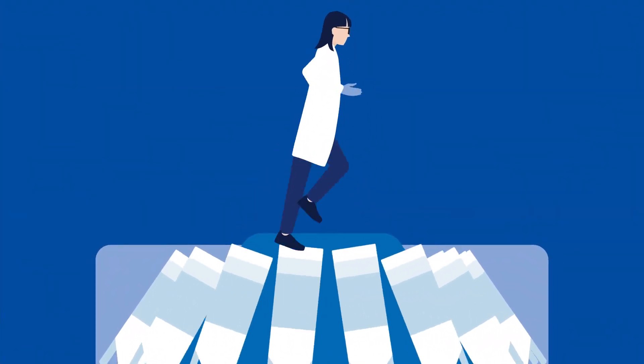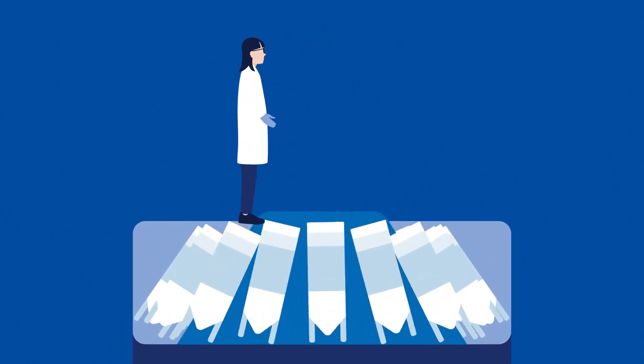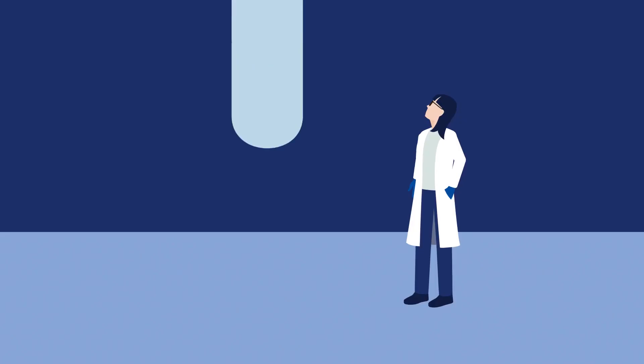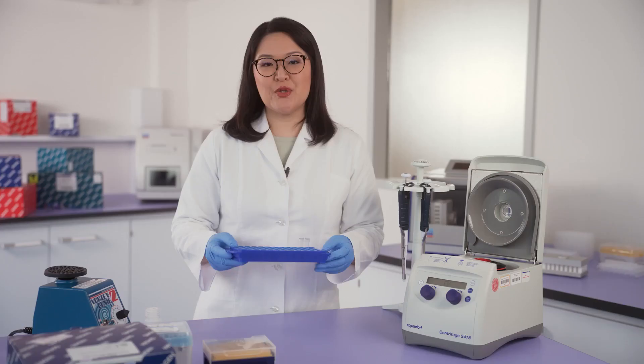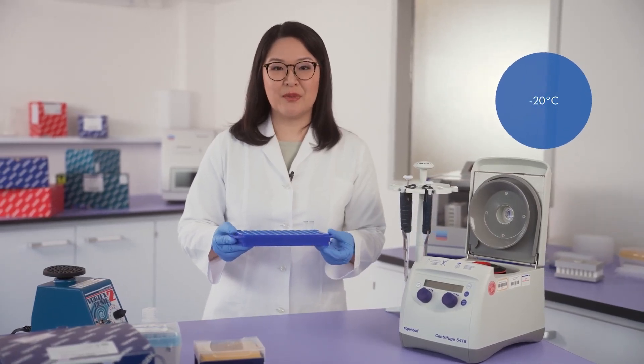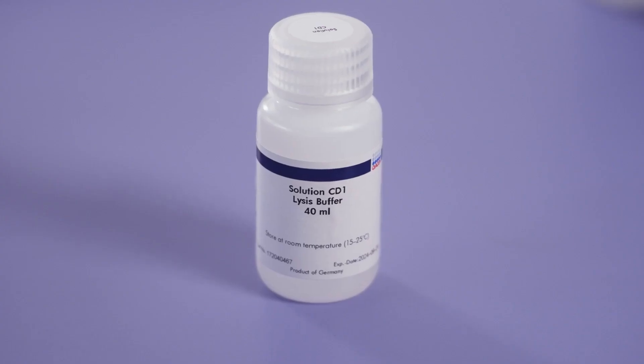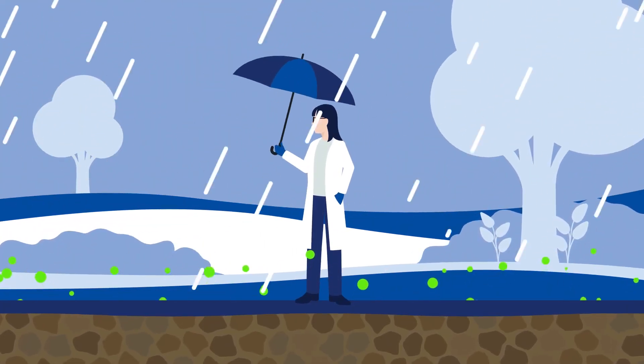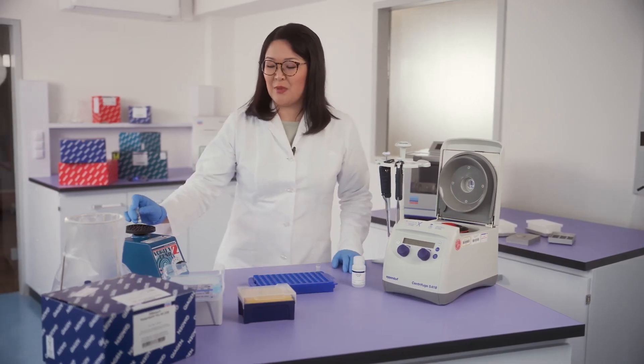Are you ready for the extraction? Let's start with the lysis. Briefly spin the PowerBead Pro tubes to make sure that the beads have settled down. Use a weighing paper or funnel to transfer the soil and put it into the tube. Make sure to not overfill to prevent inefficient disruption. You can also store the tubes overnight in the freezer before disruption. Make sure to thaw to room temperature to avoid tube breakage. Adding solution CD1 to your PowerBead Pro tubes will help disperse the soil, dissolve the humic acid, and protect the DNA from degradation.